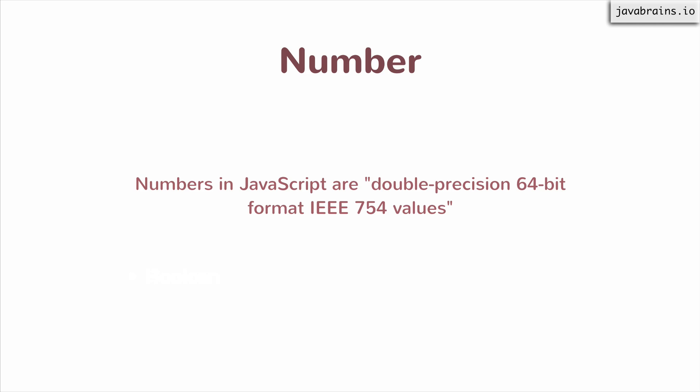Let's cover some of the differences in those types versus those other languages. Let's start with number. Number is a JavaScript type for storing numbers, and numbers in JavaScript are double precision, 64-bit format, IEEE 754 values. What this means is you don't have integers as such — this is all floating point double precision, 64-bit numbers.